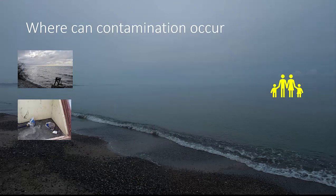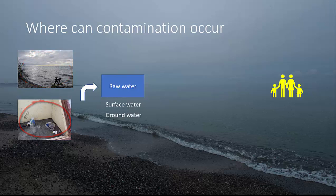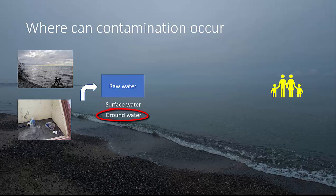Where can contamination occur? Let's start from the beginning. We have the raw water, be it surface water or groundwater. Surface water is more exposed — for example, if you have a lake with grazing cattle close by, their feces could contaminate the raw water source. Also if you have a road close by, accidents with oil and similar things. Groundwater on the other hand is well protected, but it could also become contaminated, for example through flooding where floodwater gets into the well from above.